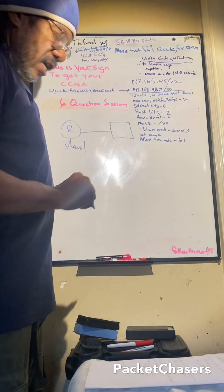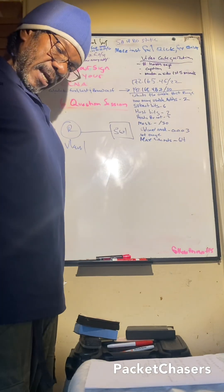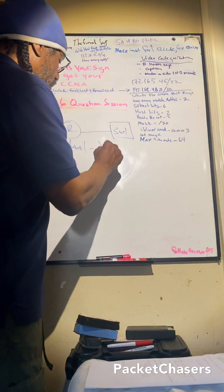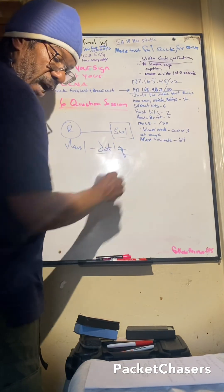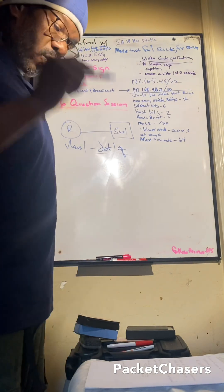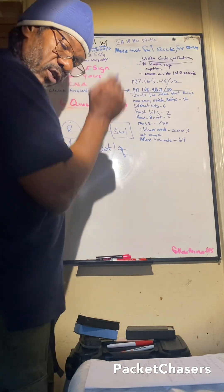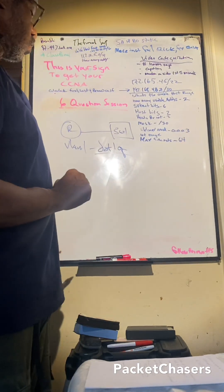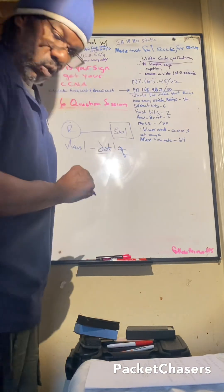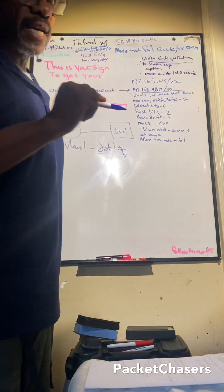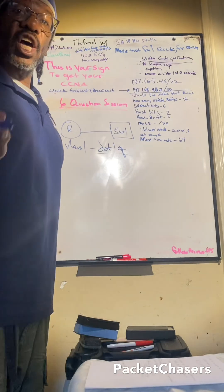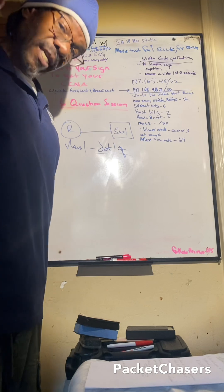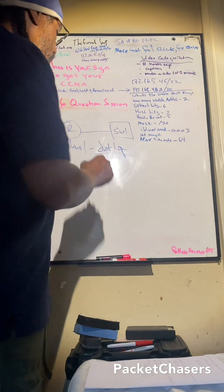The answer is VLAN 1 by default, but more specifically: the main interface or the sub-interface configured with dot1q encapsulation. Which interface processes traffic for the native VLAN if connected to a switch? It's the main interface or the sub-interface configured with dot1q encapsulation.